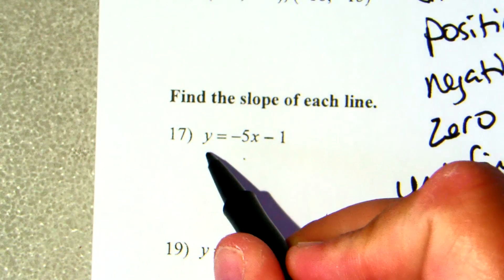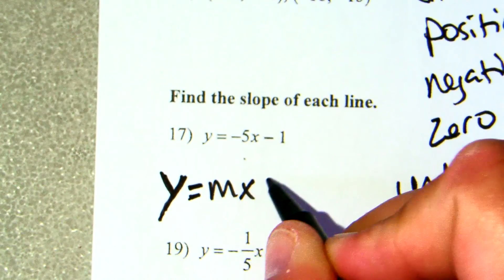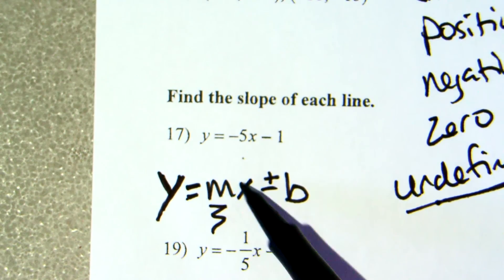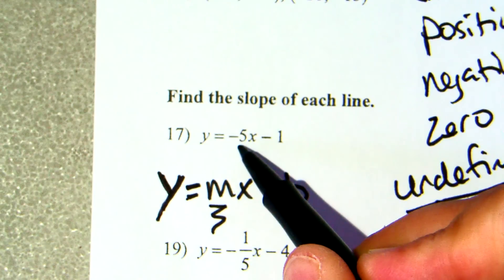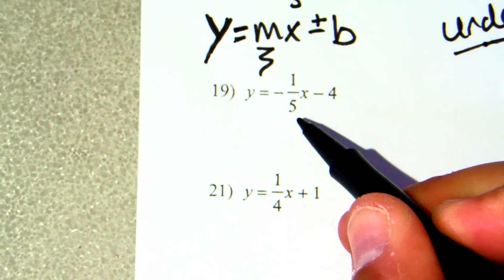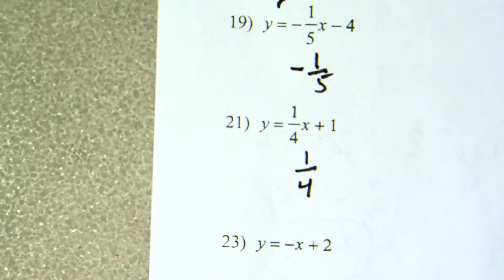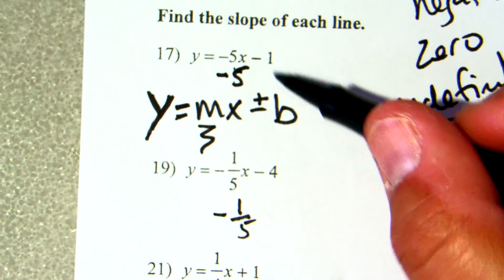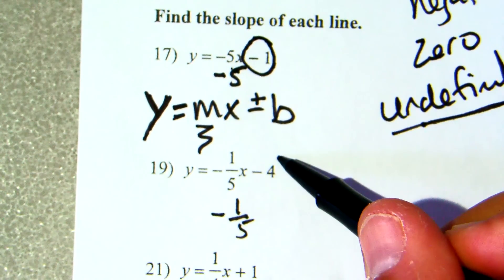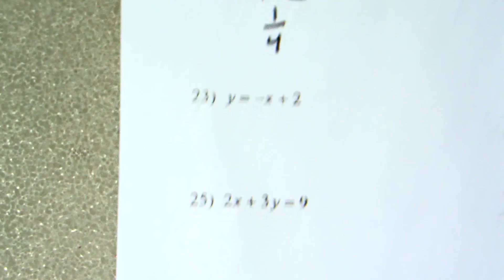The other way to find slope is when I give it to you in the equation of a line. The equation of a line is y equals mx plus or minus b, where m is the slope — it's the coefficient of x. So if the equation has negative 5x, the slope is negative 5. If it's negative one-fifth x, the slope is negative one-fifth. The last number is the y-intercept, or b.